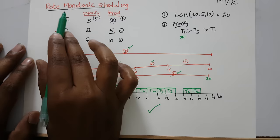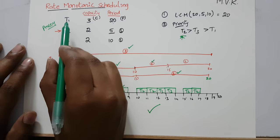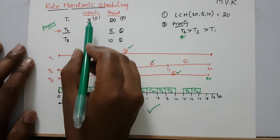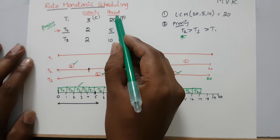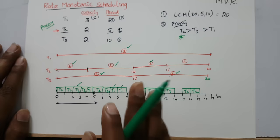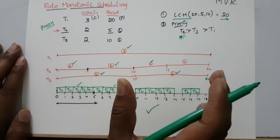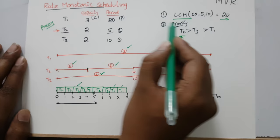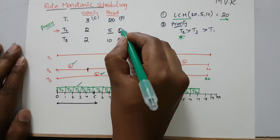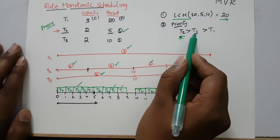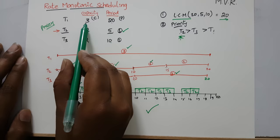To summarize the Rate Monotonic Scheduling algorithm: there are three processes with capacity and period. Capacity of T1 is 3, capacity of T2 is 2, and capacity of T3 is 2. The periods are 20, 5, and 10 respectively. Period means the process restarts execution at every regular interval. We calculate the LCM to find the total scheduling time. Priority is assigned based on period — the lowest period gets the highest priority — so T2 has highest priority, then T3, then T1.